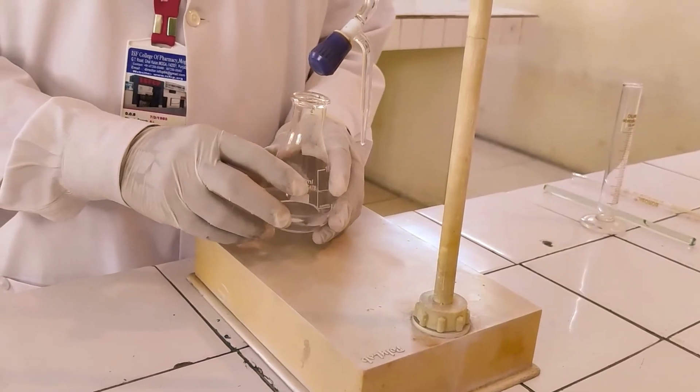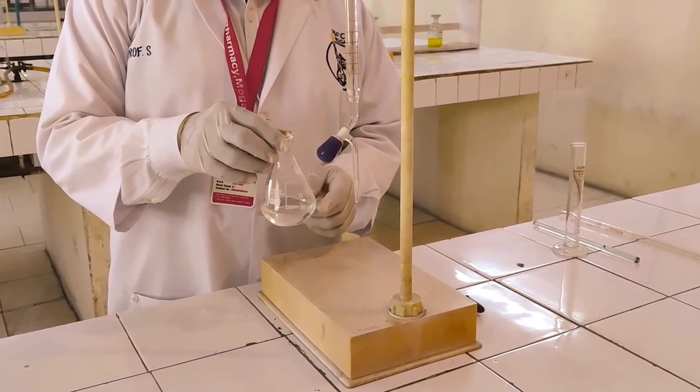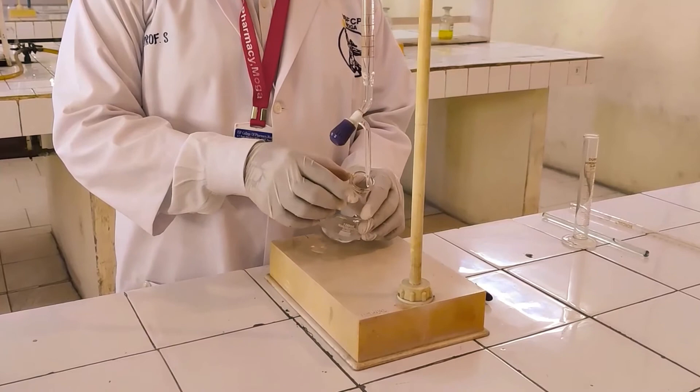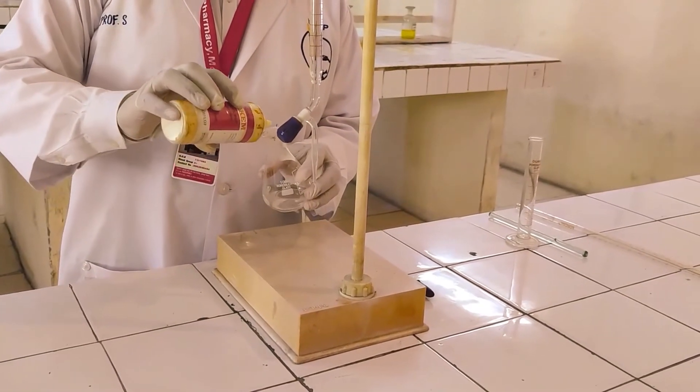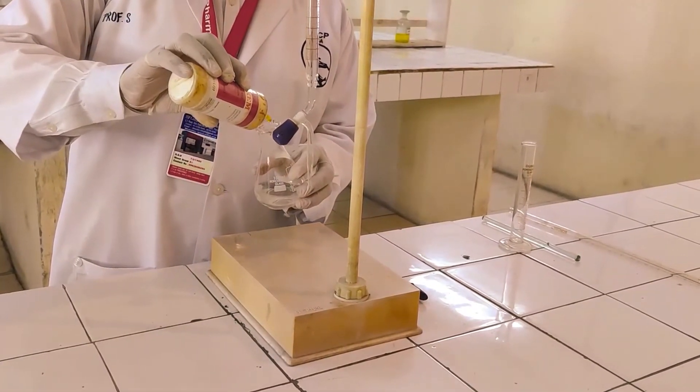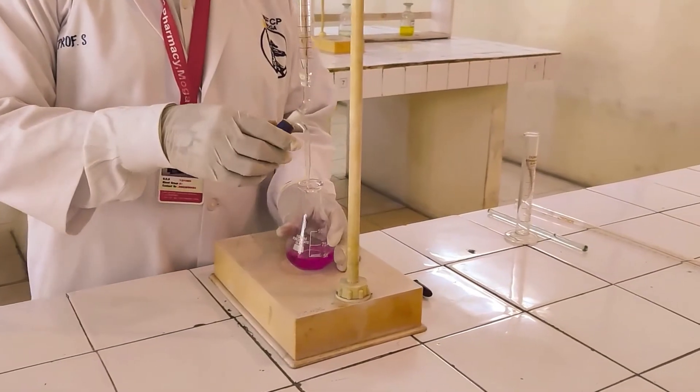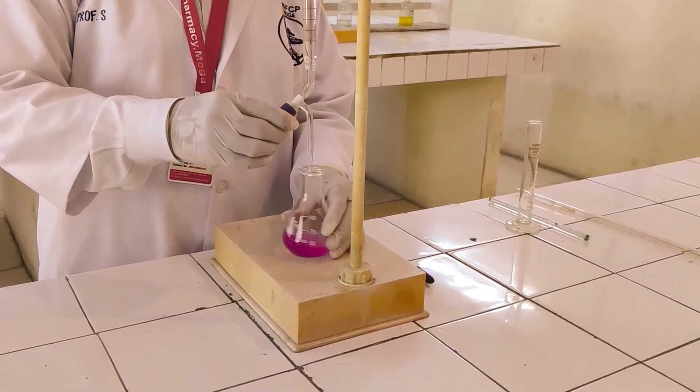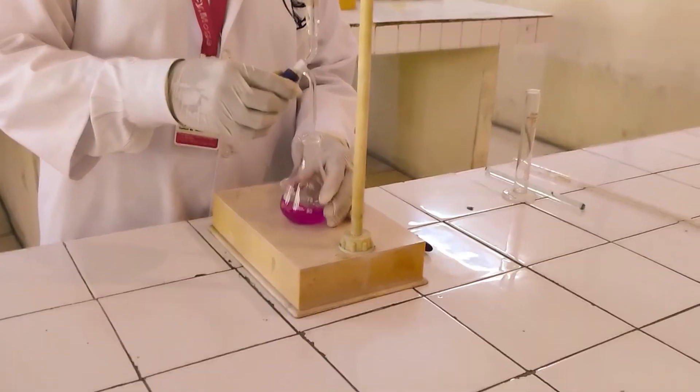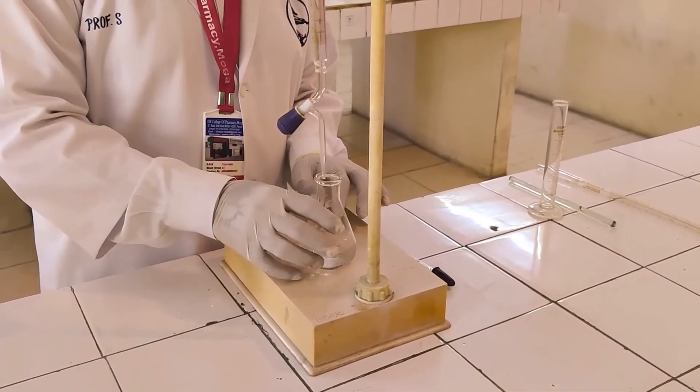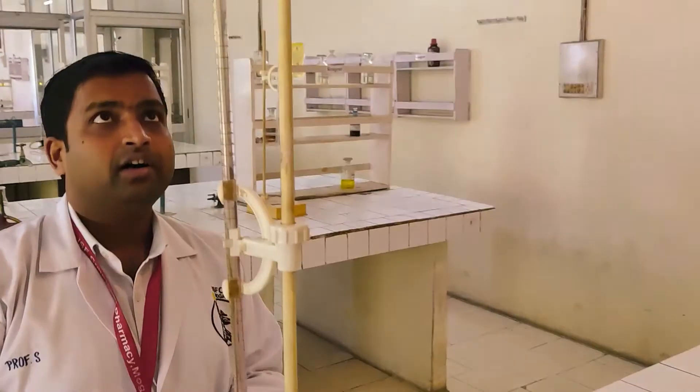In next step perform blank titration by taking a solution of 30 ml NaOH without drug and titrate it against 0.5 molar HCl solution using 2 drops of phenol red indicator. When color disappears stop the titration and read the reading of blank.